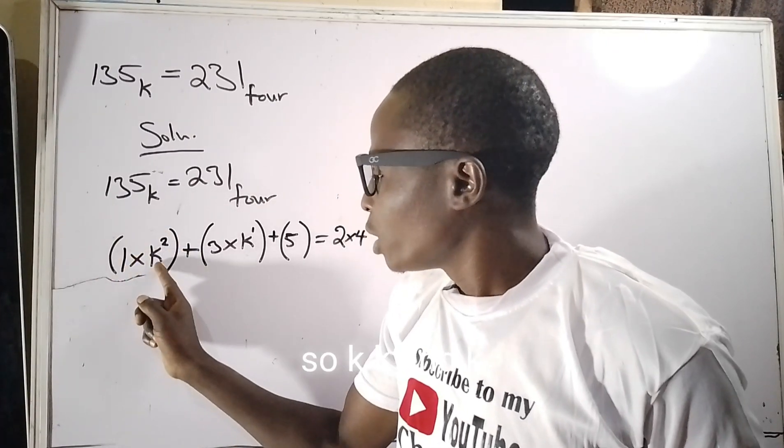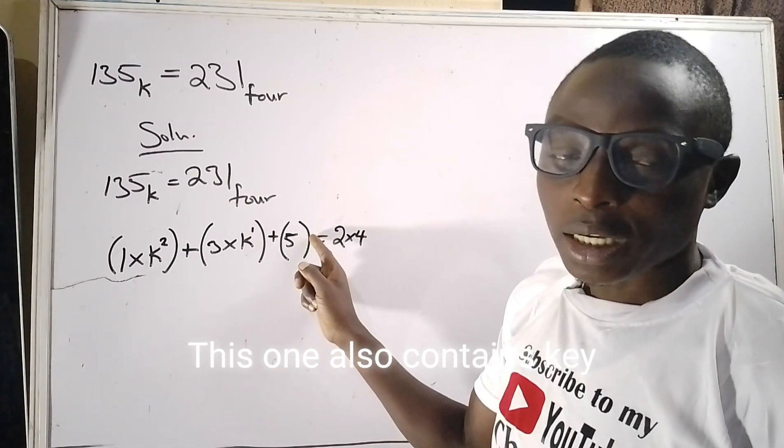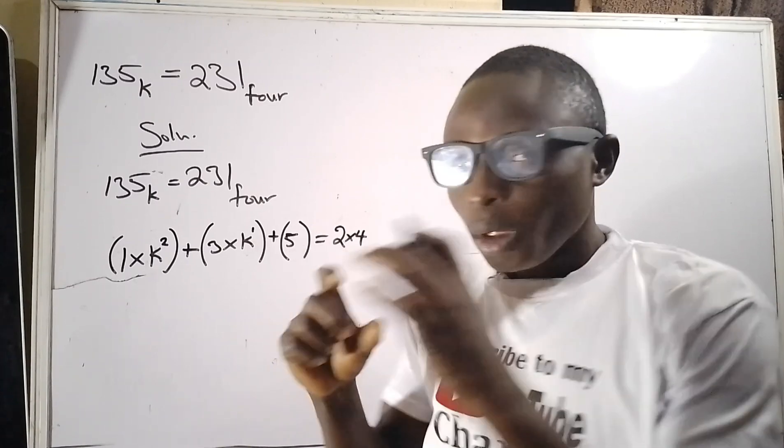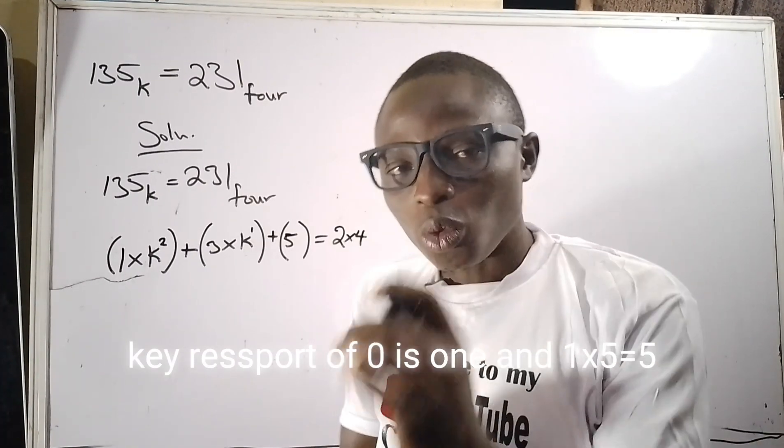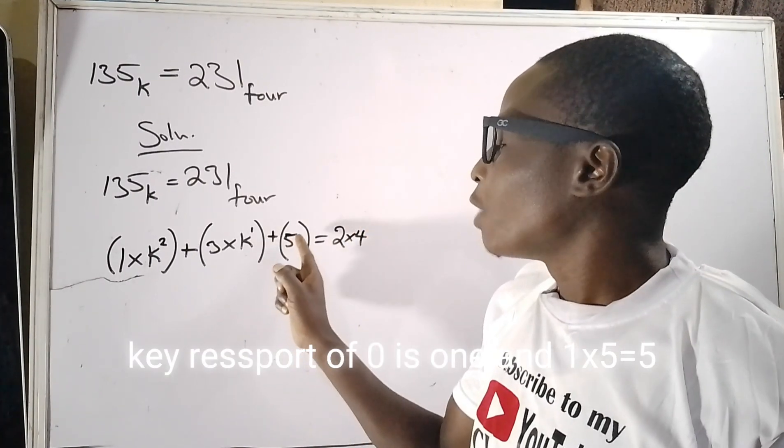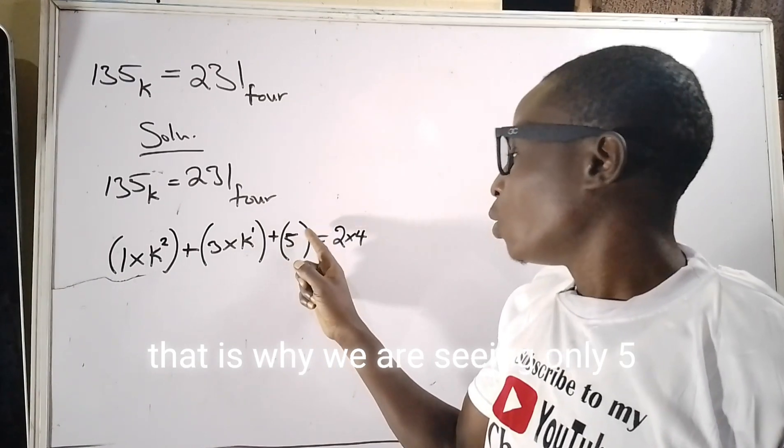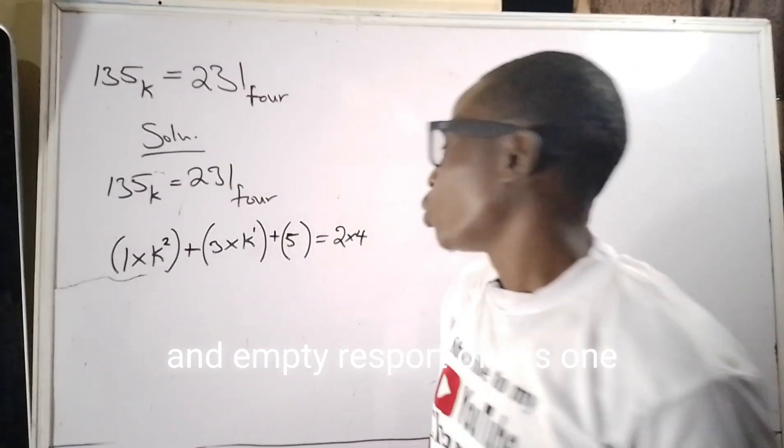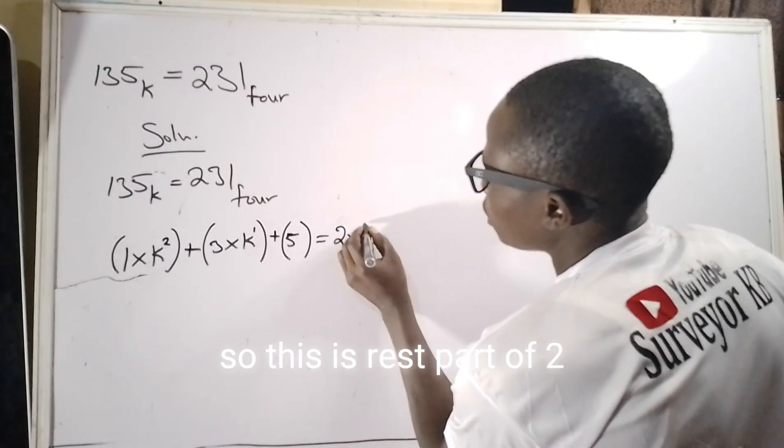The reason why I multiplied everything here by k is because the base is k. This one also contains k. The reason why you didn't see anything is because k raised to the power of zero is one, and one times five is five. That is why we are seeing only five.